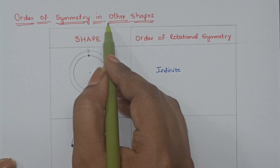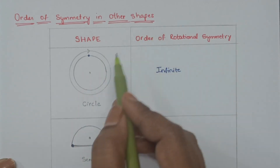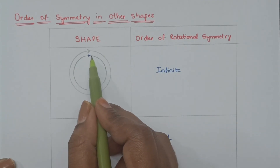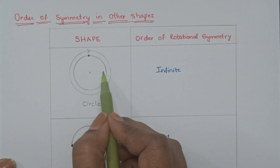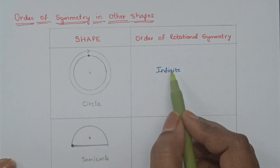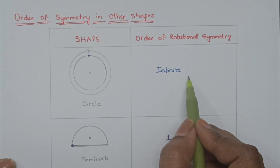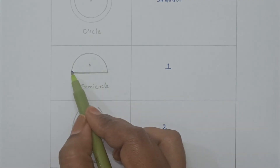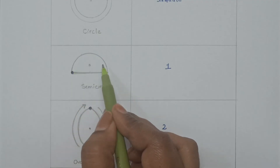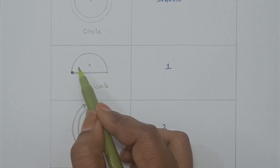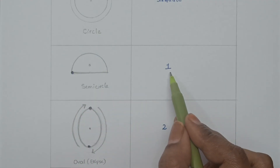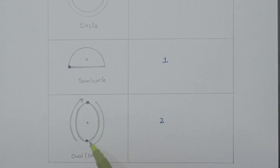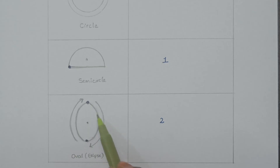Order of symmetry in other shapes. A circle looks identical at every possible angle of rotation, so it has infinite rotational symmetry. A semi-circle looks the same only at a full rotation, so the order of symmetry is 1. An ellipse has order 2 because it looks identical at 180 degrees rotation and again at 360 degrees.